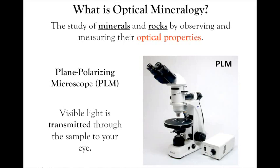Optical mineralogy is done using the plane polarizing light microscope, or PLM. It's very similar to the type you're going to use in lab — we just got a brand new set for the department. It looks like a standard light microscope, but it has the capability to polarize light at different points between the light source in the base and the oculars at the top. There are two polarizing crystals in it, plus other components useful for optical mineralogy.